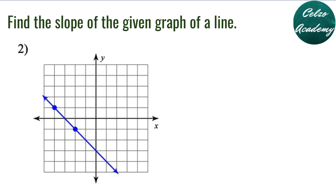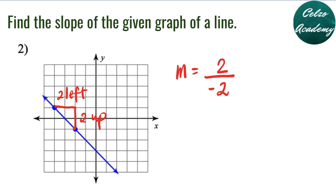Question 2: find the slope of the given graph. The two points are already identified, so we need to draw the right triangle. From the lower point, we go 2 units up and 2 units to the left. 2 units up means positive 2, and 2 units left means negative 2. If you go left it's negative; if you go right it's positive. So 2 divided by negative 2 is negative 1 — the slope is negative 1.